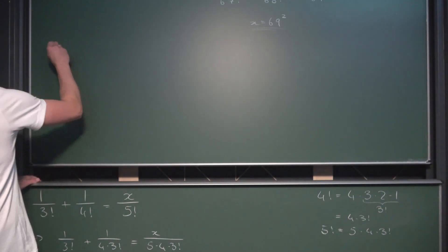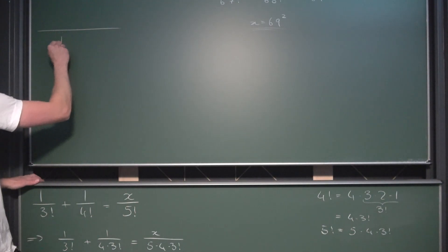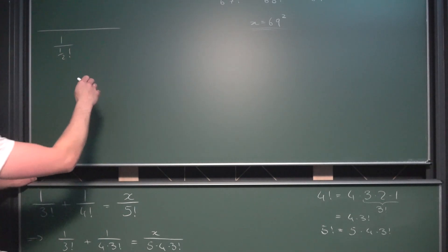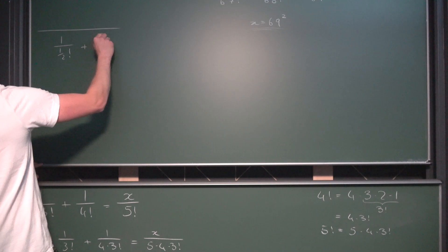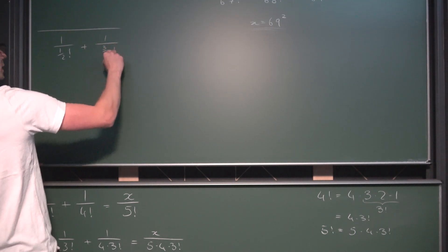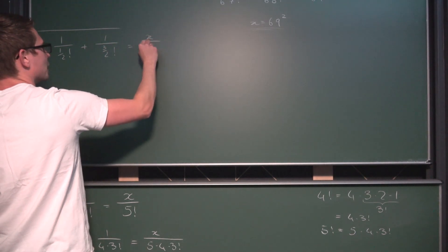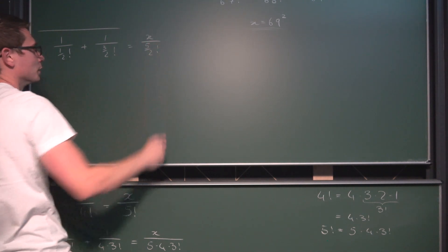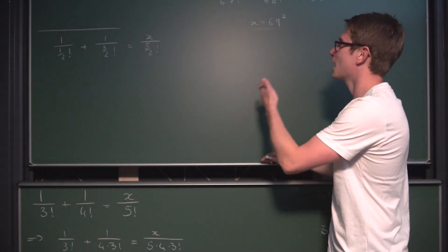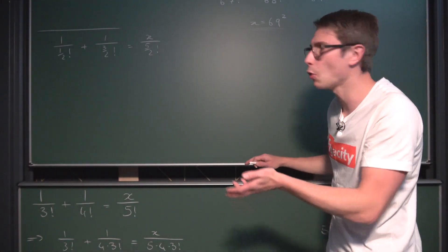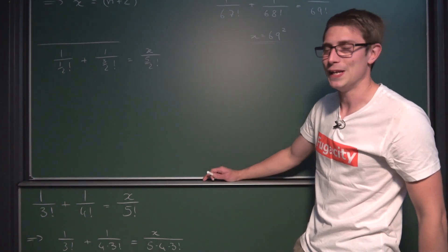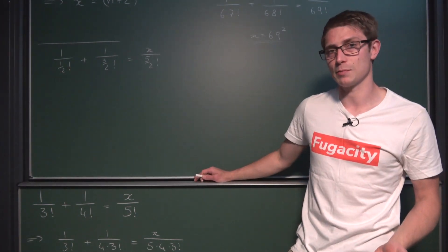If we take a look at the equation 1 divided by one-half factorial plus 1 divided by three-halves factorial is equal to x divided by five-halves factorial — what is this going to evaluate to? That looks kind of funky, right? In the normal case we deal with integer factorials. How can you have half-integer values? Well, this is where the gamma function comes in.